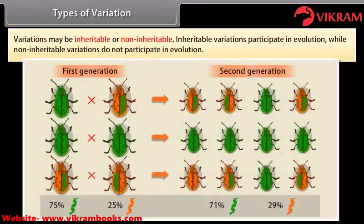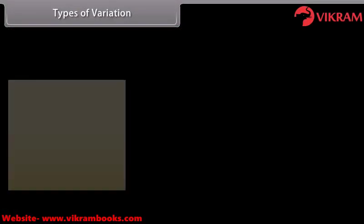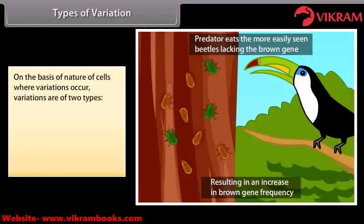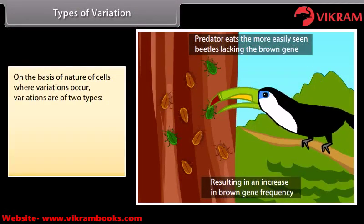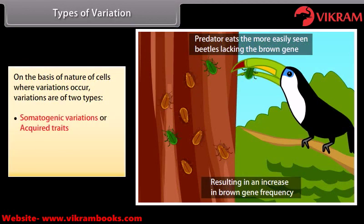Variations may be inheritable or non-inheritable. Inheritable variations participate in evolution while non-inheritable variations do not. On the basis of the nature of cells where variations occur, variations are of two types: somatogenic variations or acquired traits, and germinal or blastogenic variations.